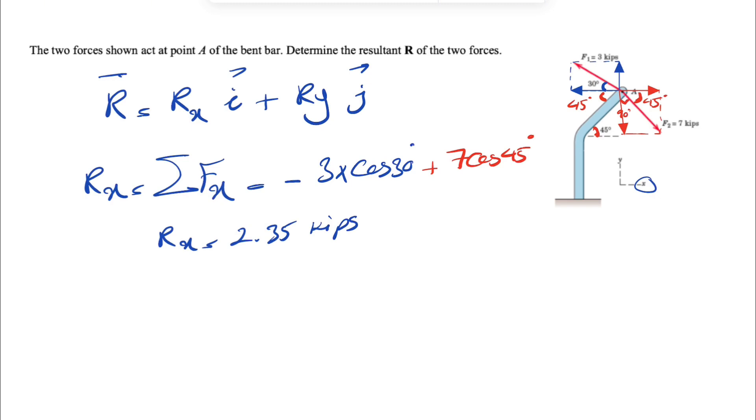We're going to do the same thing for Y. Ry is the sum of all forces in the Y direction. This time F1 has a positive Y component, so it will be 3. We're looking at the opposite side of the right triangle, so it will be 3 times sine of 30 degrees. F2 has a negative Y component since it's downward.